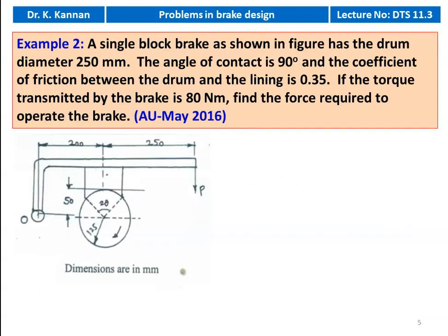Example number 2, from the May 2016 question paper. A single block brake as shown in the figure has a drum diameter of 250 millimeter, with the radius marked as 120 millimeter. The angle of contact is 90 degrees and the coefficient of friction between the drum and the lining is 0.35. If the torque transmitted by the brake is 80 Newton meter, find the force required to operate the brake.